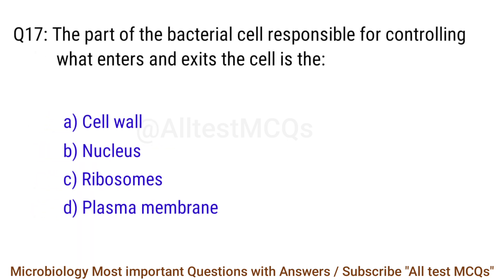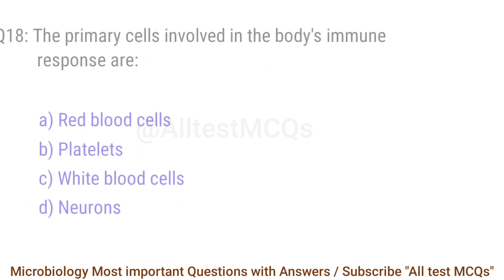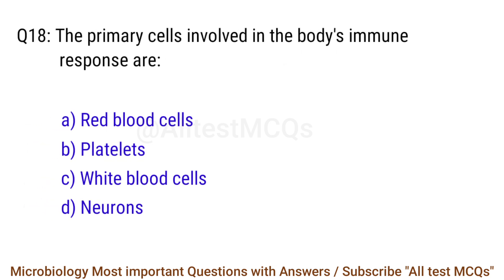Q17. The part of the bacterial cell responsible for controlling what enters and exits the cell is the right answer is option D: Plasma membrane. Q18. The primary cells involved in the body's immune response are? The right answer is option C: White blood cells.